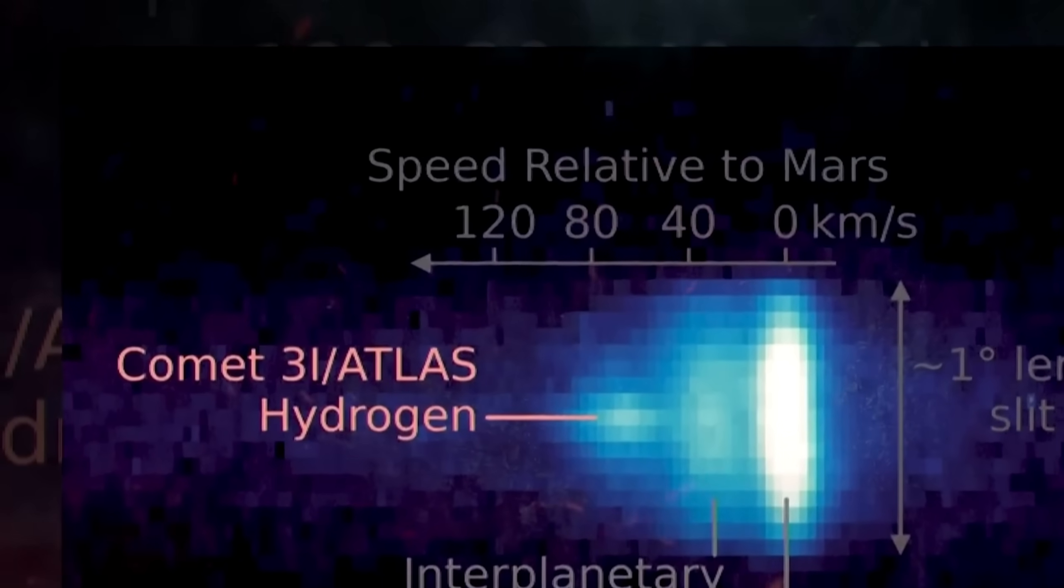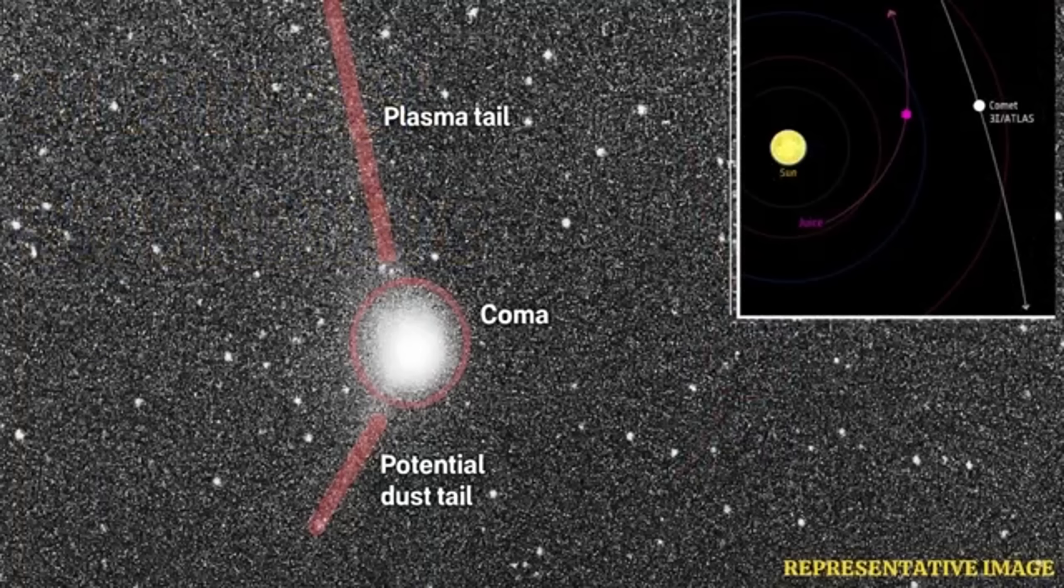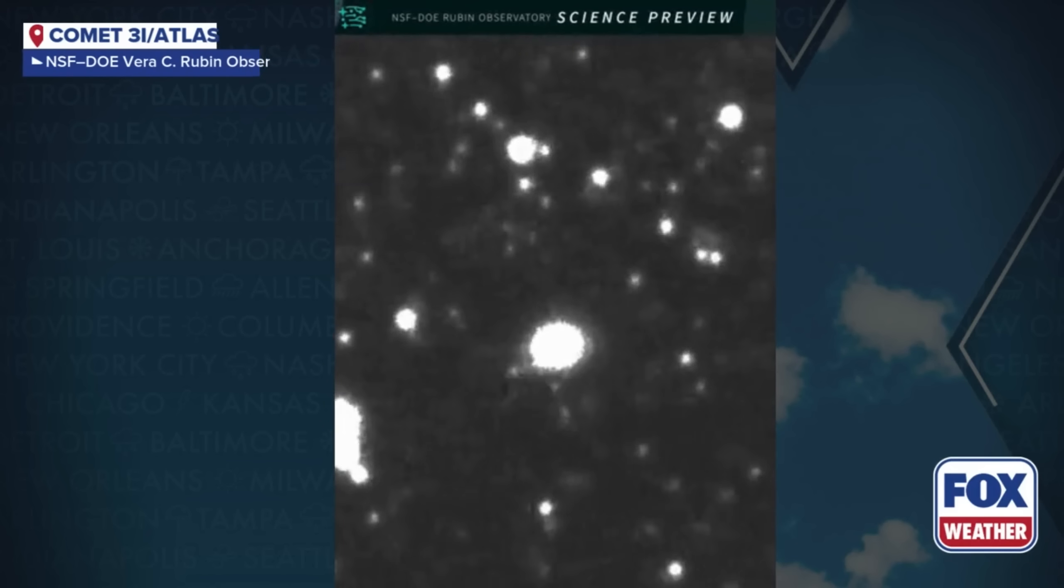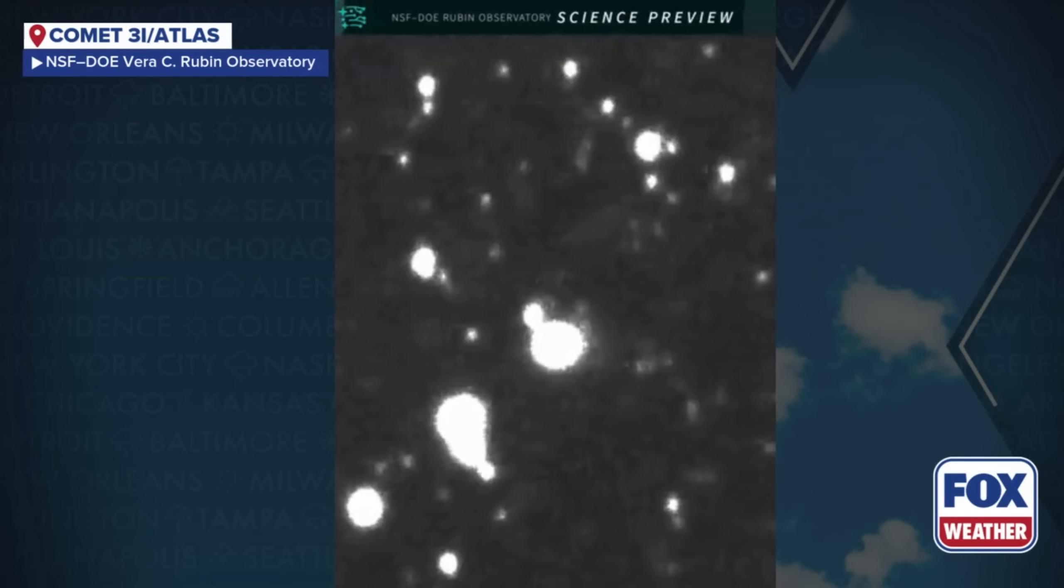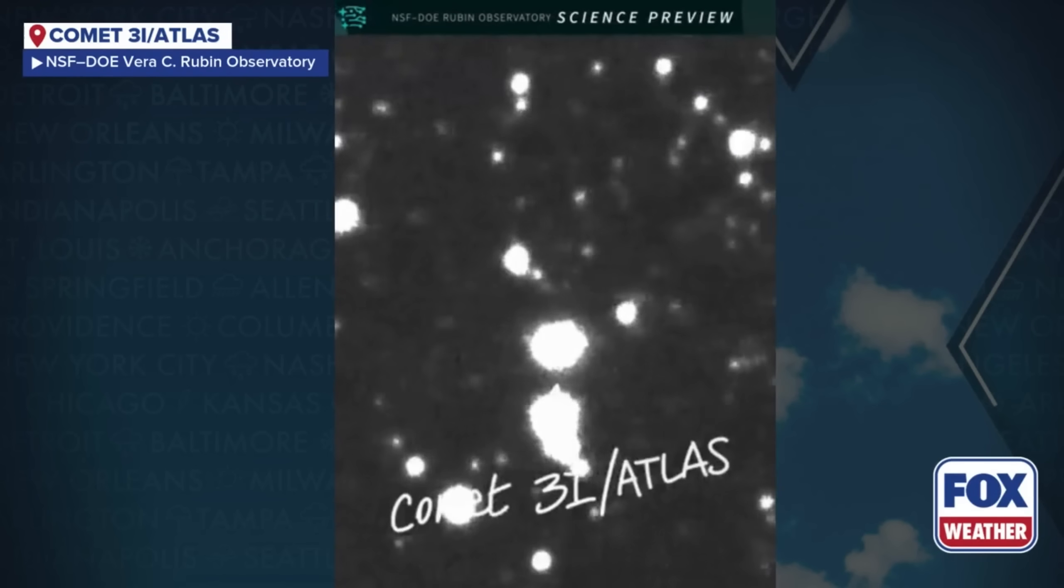It was also moving in a retrograde orbit, meaning it was traveling in the opposite direction to all the planets. For a vessel wanting to deploy smaller probes, this is the ideal approach. It maximizes relative speed and allows for easier orbital insertion. The evidence for intelligent design was circumstantial, but it was piling up into a mountain of anomalies. Then the new data confirmed what some scientists had secretly feared. The slight deviation was not random. It was a controlled non-gravitational acceleration, an engine burn. This wasn't the gentle unpredictable outgassing of a comet. This was a deliberate course correction.